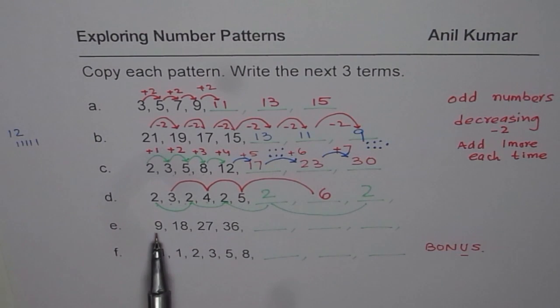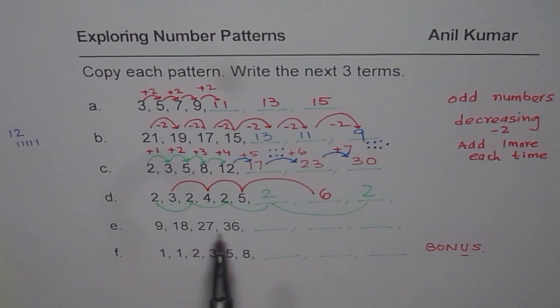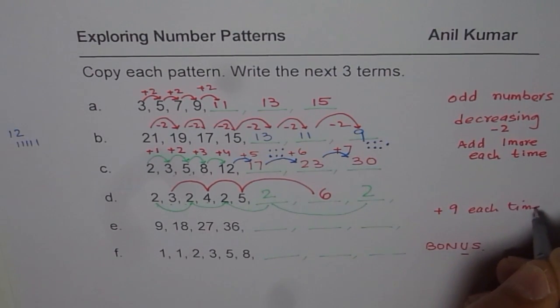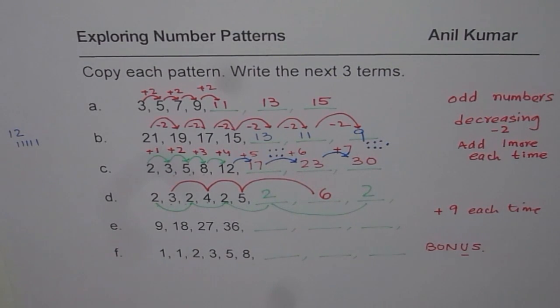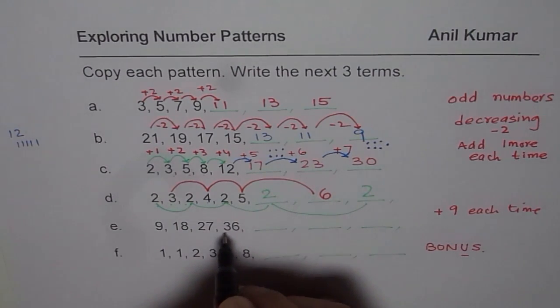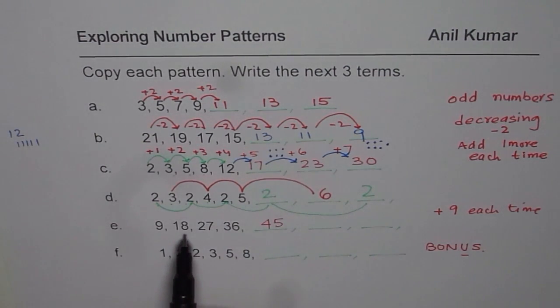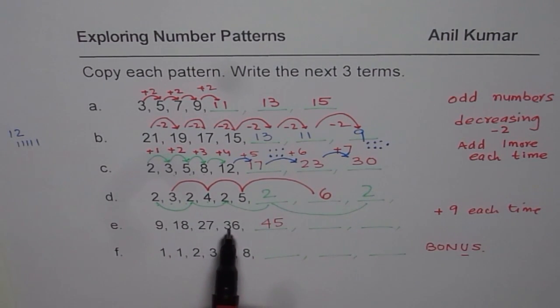Now this one is 9, 18, 27, 36. How do we get this? It is 9 times table, right? So you are adding 9 each time. So you add 9 each time to get this one. Right? So you add 9 each time and then complete the next three terms. So 36, you get 45.